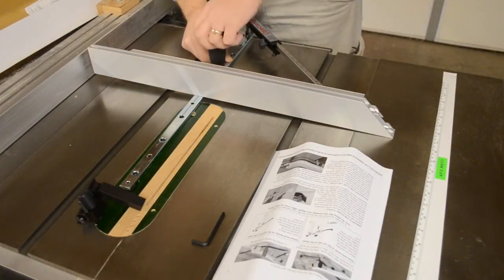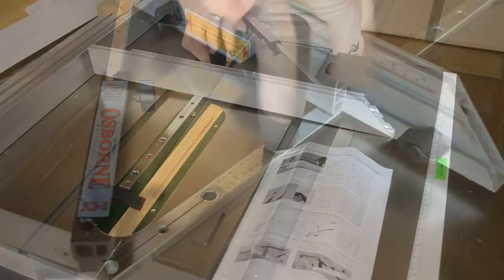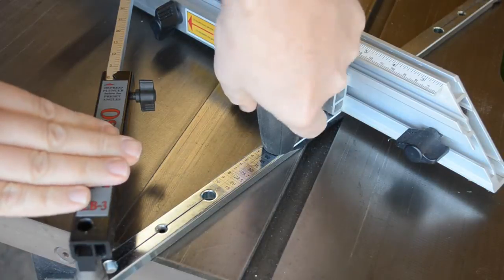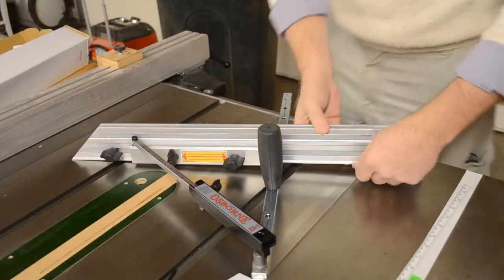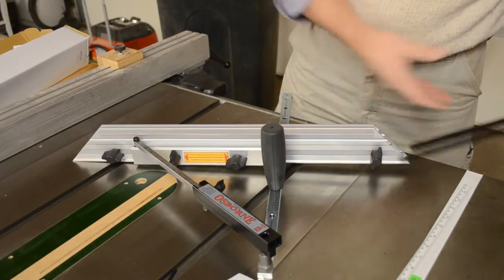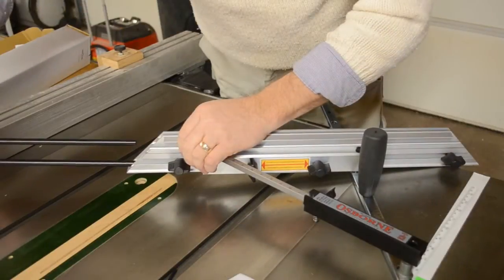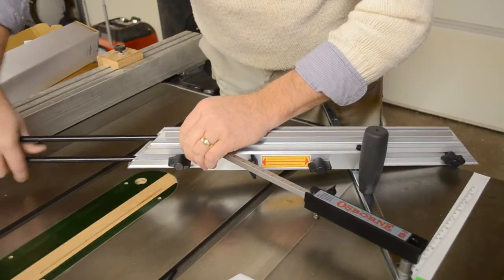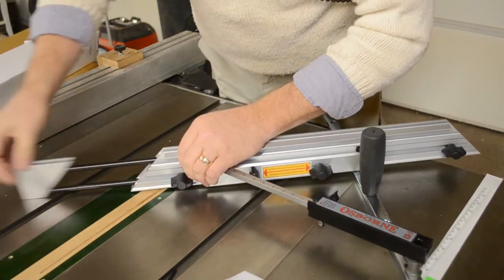The handle simply screws into a pre-tapped hole in the miter bar. The fence extension is commonly used on the left side of the EB3, but for packaging purposes comes installed on the right. Just loosen the lock knobs and reset the extension on the left side.